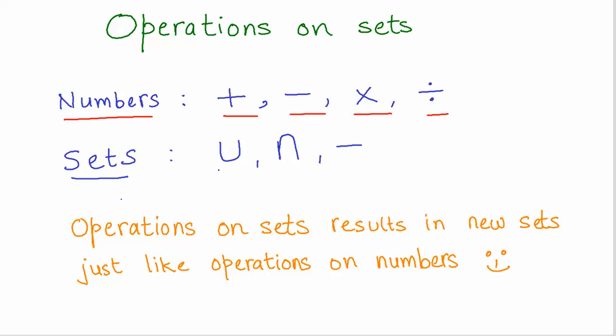Similarly, we will look at what are the operations on sets and what are their properties, specifically the commutative, associative, and identity properties. The three operations that we are going to study in the coming videos are union, intersection, and difference.